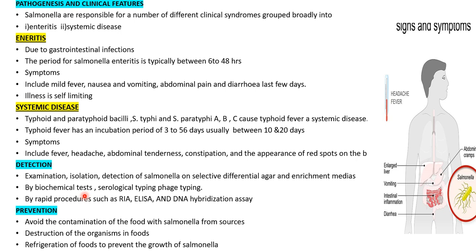Prevention measures for salmonellosis include: avoiding contamination of food from diseased humans, animals, and carriers; destruction of the organism by proper heating, cooking, and pasteurization; and prevention of Salmonella growth in food by adequate refrigeration or other means. By following these preventive measures, Salmonella growth can be controlled and food contamination prevented.